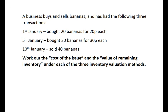So we've got our example here. On the 1st of January, the business buys 20 bananas, that's a receipt of inventory for 20 pence each. On the 5th of January, they buy a further 30 bananas, meaning at that point they'll have a total of 50, with a slight increase in the price of bananas, maybe a bit of inflation there.